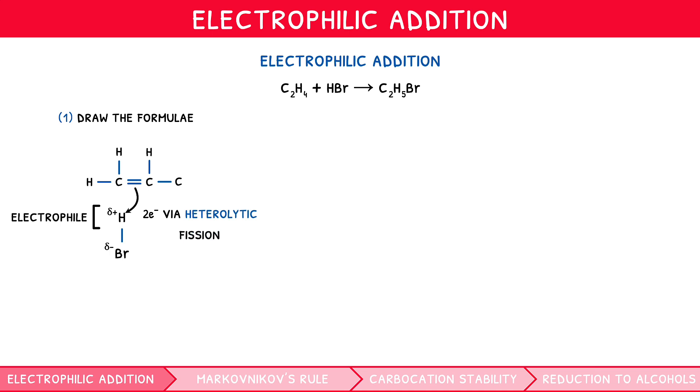Since hydrogen can only form one bond, this triggers the breaking of the hydrogen-halogen bond, so that both electrons pass to the halogen, again indicated using a double-headed curly arrow from the hydrogen-halogen bond to the halogen.